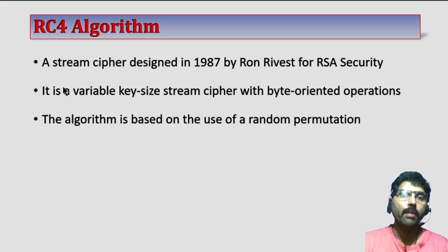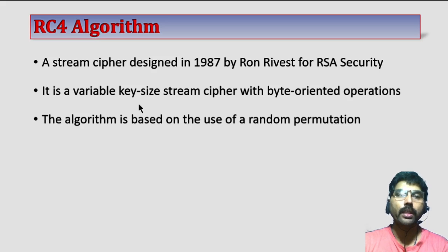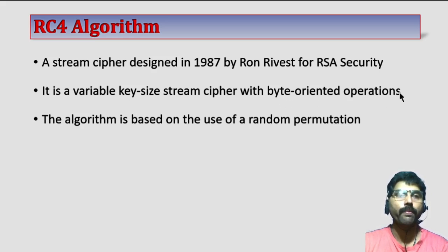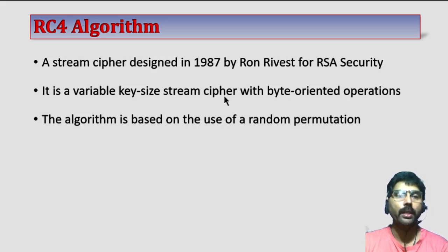This stream cipher takes a variable key size and returns ciphertext in the form of bytes, so it is called a byte-oriented operation. It takes one byte from the plain text and converts it into a cipher byte. RC4 algorithm works on bytes.